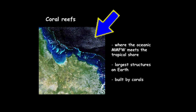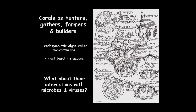Coral reefs exist in seas with roughly a million bacteria per milliliter rushing over them, and they have to deal with all these microbes. Corals are really interesting — they're hunters: they're cnidarians with nematocysts, so they reach out and eat zooplankton by killing them. They're gatherers because they build reefs that cause upwelling and bring up nutrient-rich water. They're farmers because they have zooxanthellae — dinoflagellates that live inside their tissue and allow them to harvest energy via photosynthesis. And finally, they're the builders of the biggest structures ever built on earth.